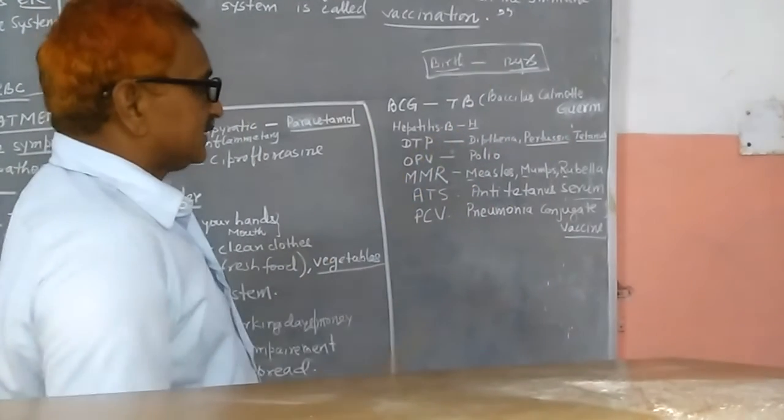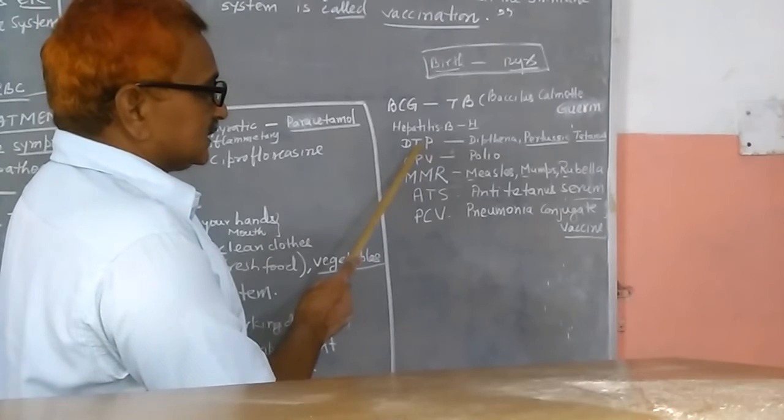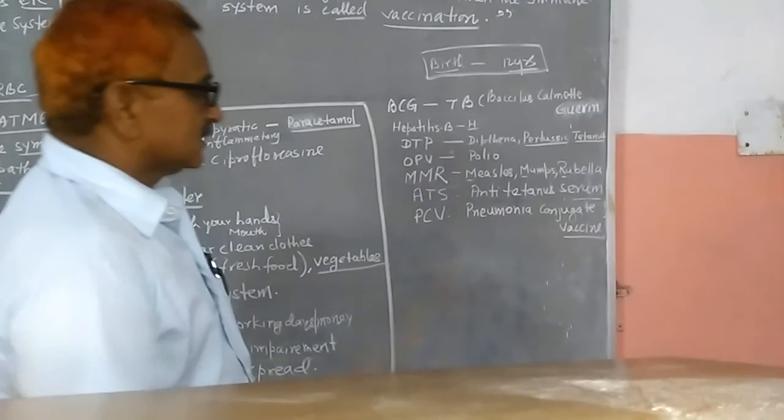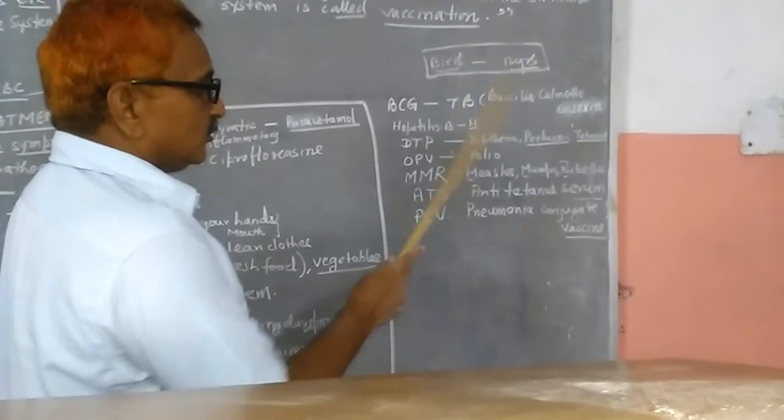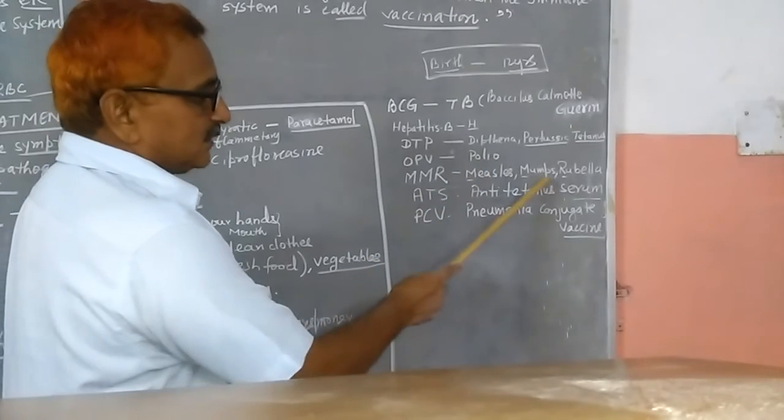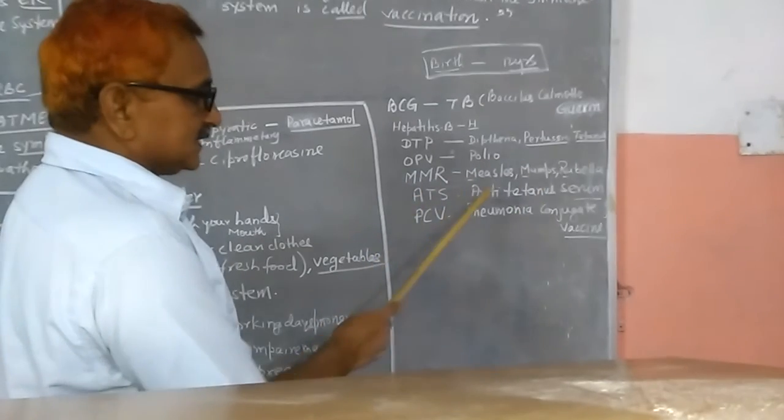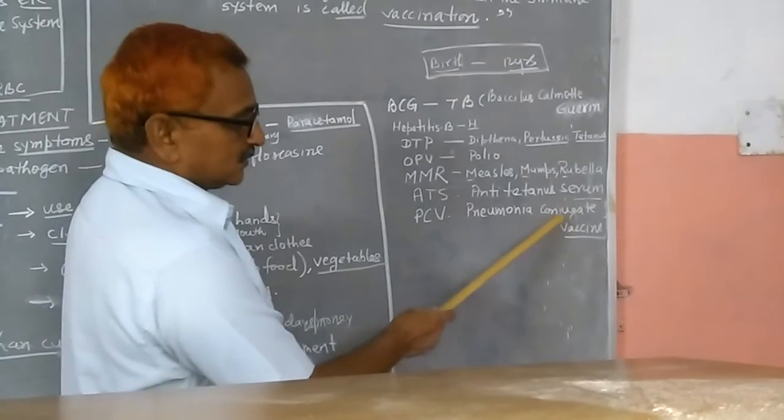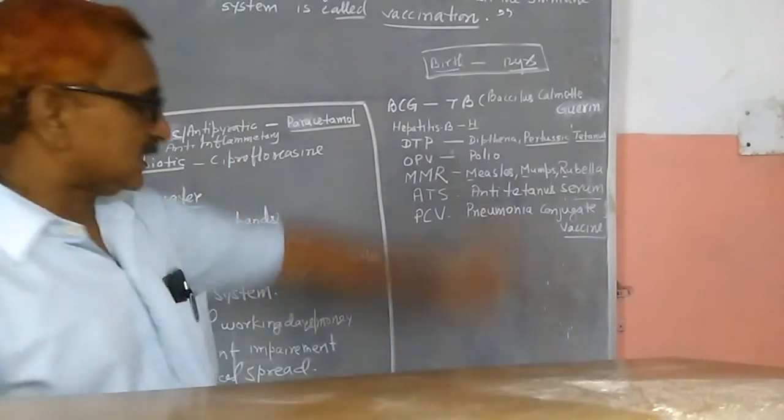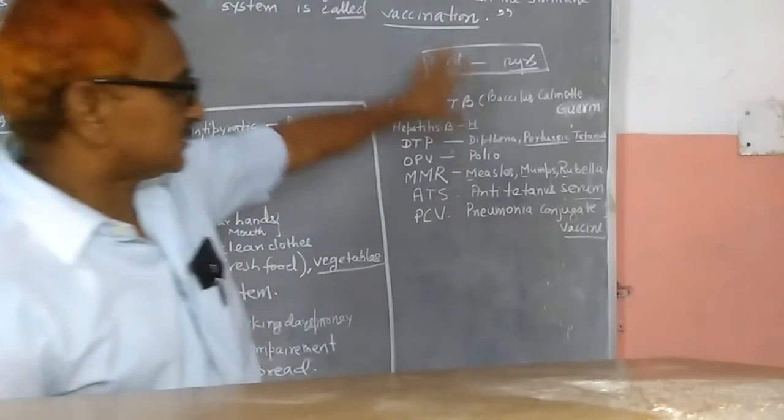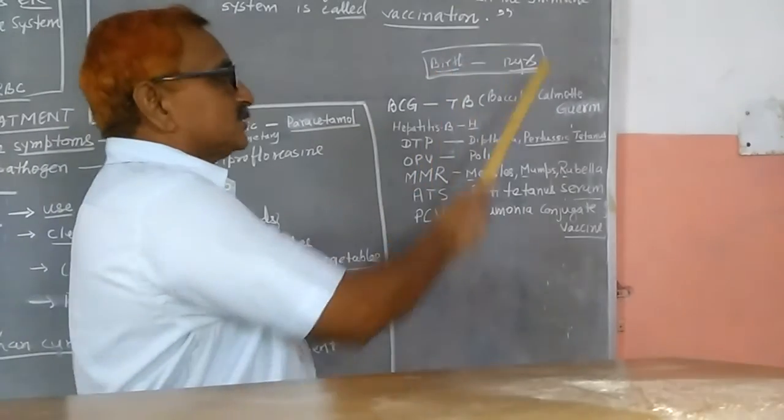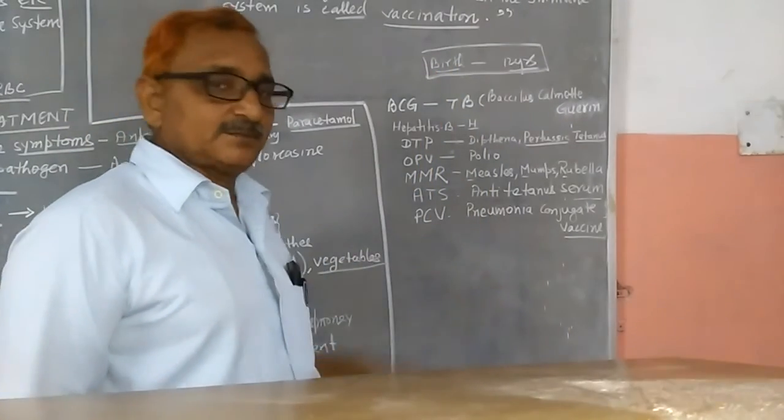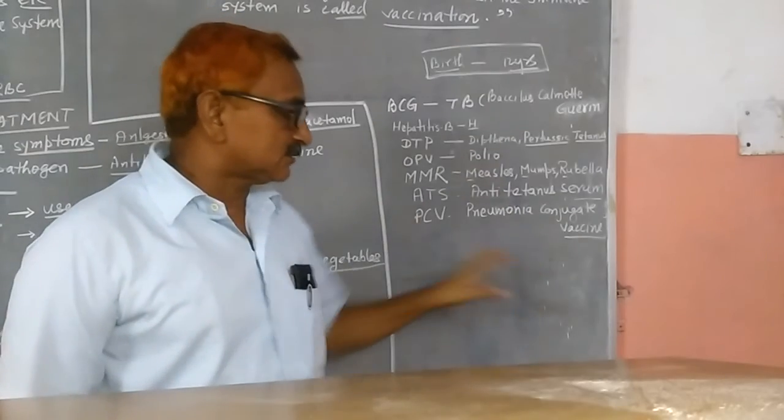Hepatitis vaccine for hepatitis, DTP for diphtheria, pertussis, and tetanus. These are the vaccines given to the child between birth to 12 years of age. Various diseases are covered in medical prescription or in medical hospitals.